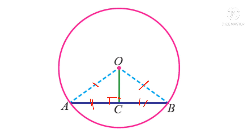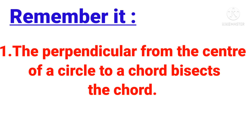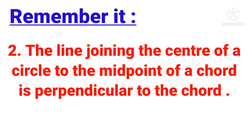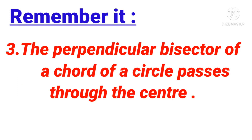If AC equals CB and OC joins C to the center O, then OC is perpendicular to AB. One more property: the perpendicular bisector of a chord of a circle passes through the center. So remember three chord properties: first, the perpendicular from the center bisects the chord; second, the line from the center to the midpoint of a chord is perpendicular to it; third, the perpendicular bisector of a chord passes through the center.